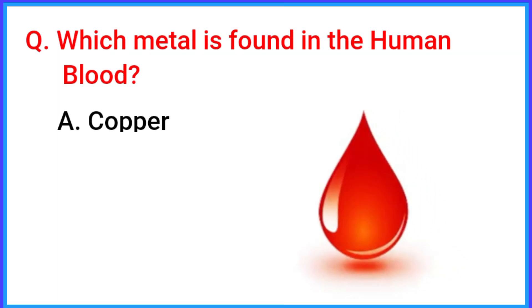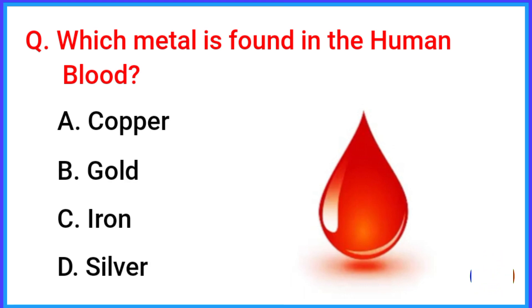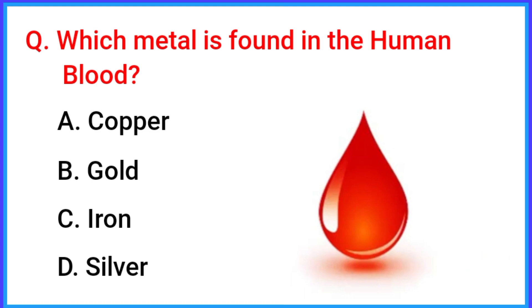Which metal is found in human blood? The correct answer is option C: iron.